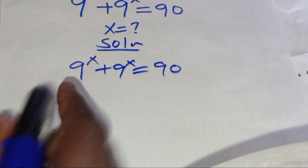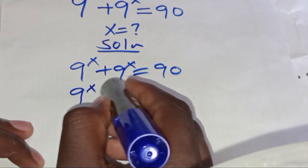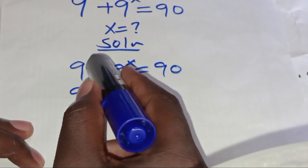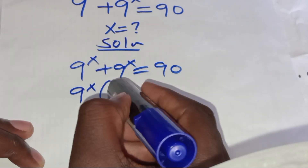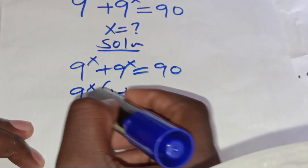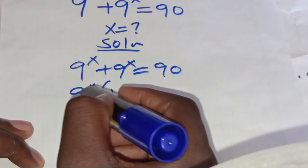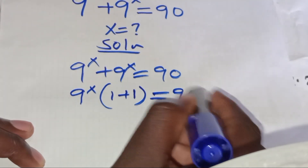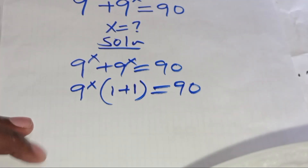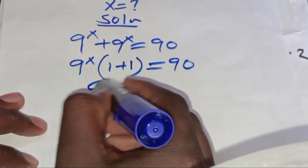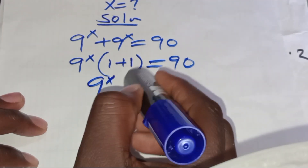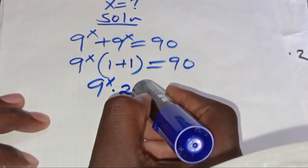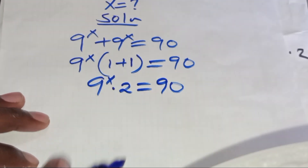As you can see, 9 to the power x is common, so we can factor out 9 to the power x. We get 9 to the power x times (1 plus 1), which equals 2, and this is equal to 90.